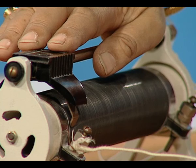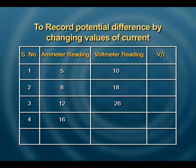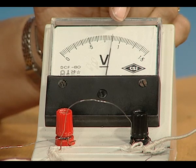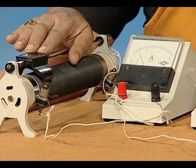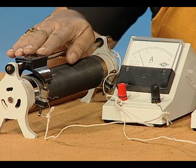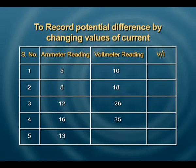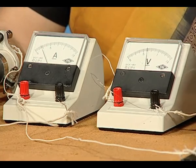We take more readings. The ammeter reading is now 16 divisions and the corresponding voltmeter reading is 35 divisions. We can take at least 5 readings — a minimum of 5 are required to plot a graph, since a graph shows the variation between two physical quantities. The final reading gives an ammeter reading of 13 divisions and a voltmeter reading of 28 divisions.